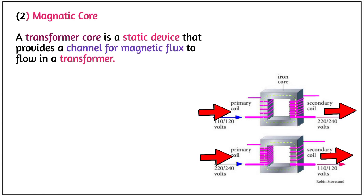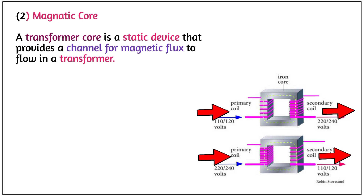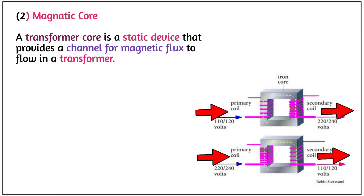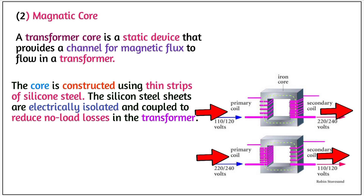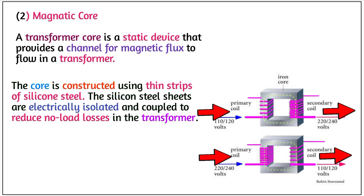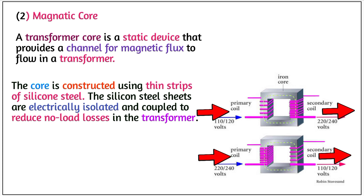Number 3: Magnetic core. A transformer core is a static device that provides a channel for magnetic flux to flow in the transformer. The core is constructed using thin strips of silicon steel. The silicon steel sheets are electrically isolated and coupled to reduce no-load losses in the transformer.